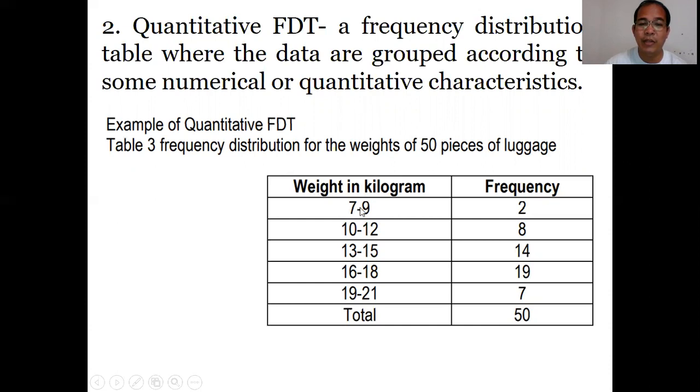So we have 7 to 9 kilograms, 10 to 12 kilograms, 13 to 15 kilograms, and so on. For 7 to 9, the lower limit is 7 and the upper limit is 9. So we have lower limits of 7, 10, 13, and upper limits of 9, 12, 15, 18, 21.